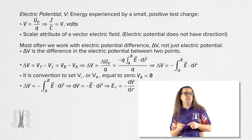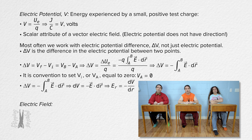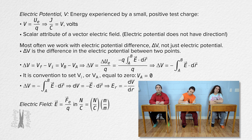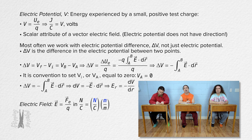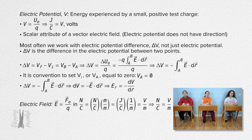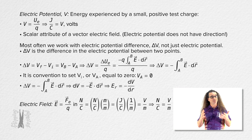Now that we have the electric potential units of volts, let's take another look at the units for the electric field. Electric field equals electrostatic force over charge, so the units are newtons per coulomb. If we multiply that by meters over meters — which equals one — on the top we have newton meters, and newton meters are joules, and joules per coulomb are volts. So the units for electric field are either newtons per coulomb or volts per meter; they are the same thing. Thank you for learning with me today.